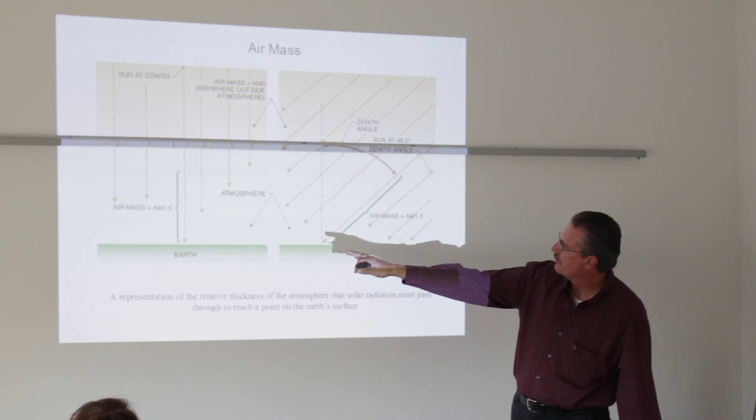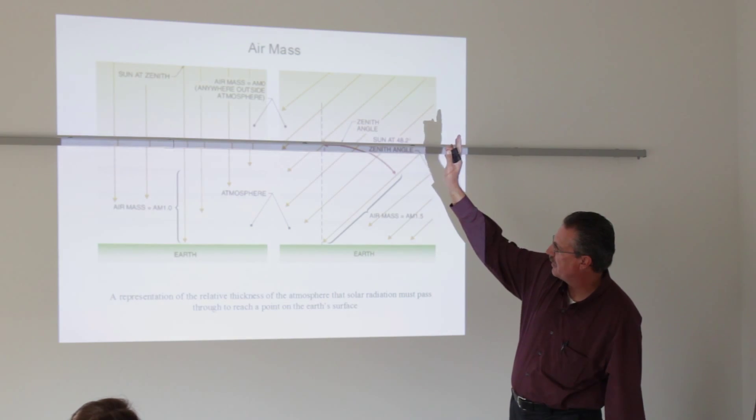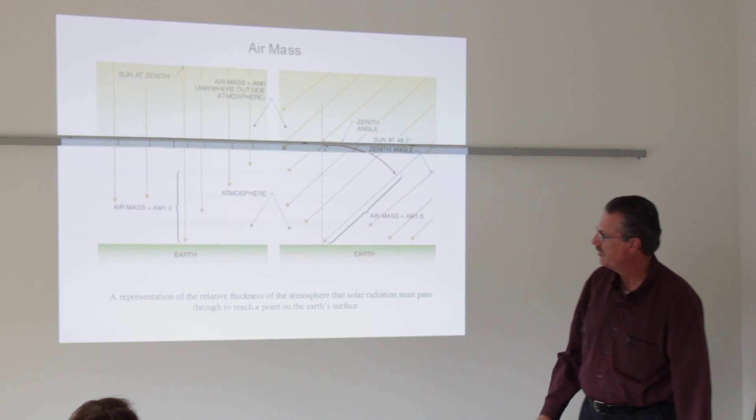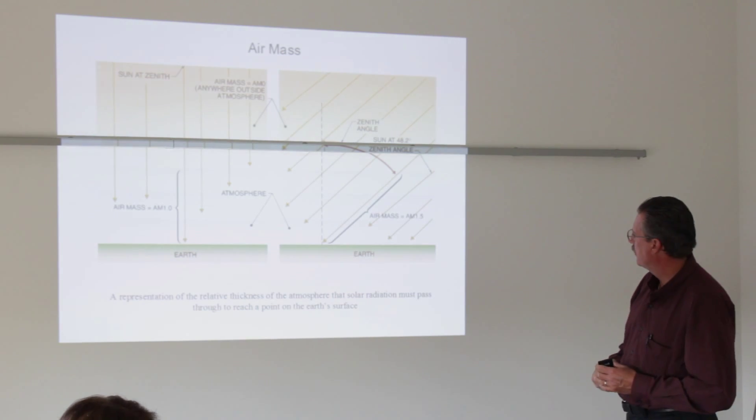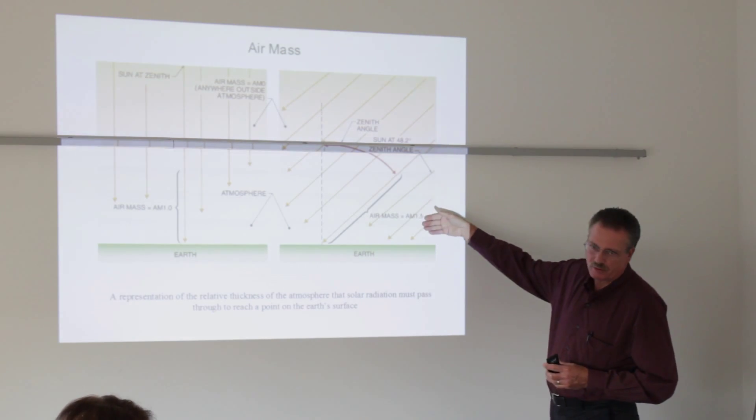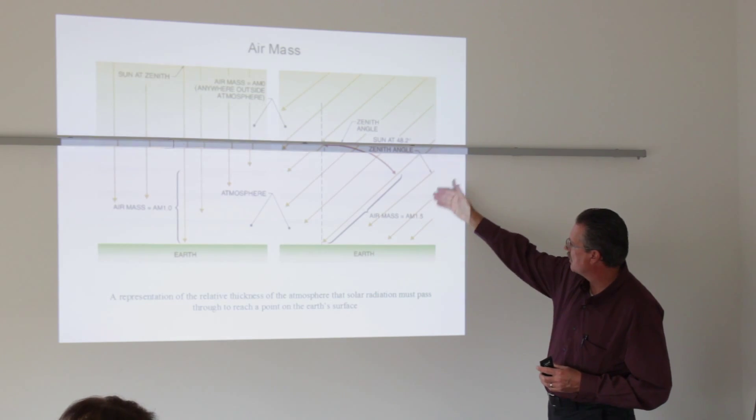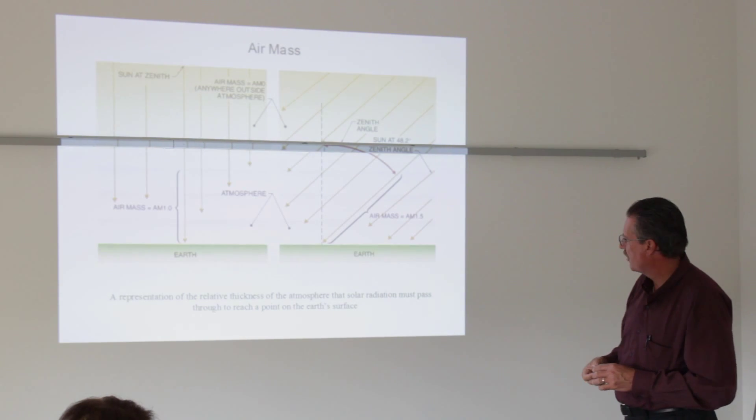So they use an air mass of 1.5. If you were on the equator with the sun directly overhead, you would have an air mass of 1. Here in Illinois and most anywhere else off the equator, because the sun now is shining at an angle, air mass of 1.5. So you have some slight reduction in solar radiation.